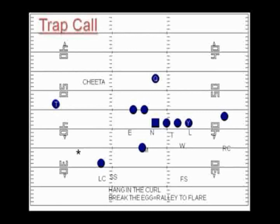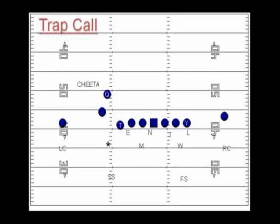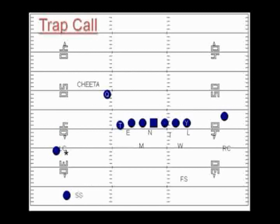Force the quarterback to throw to the flare — give the star an opportunity to vision, break, make a tackle, and rally to the ball. On a sprint out, the quarterback is moving to launch point — the corner starts to sink, sits down, and splits the zone. Seeing two vertical, he knows he's got to split the zone at 12 yards, play underneath number two, then give a china call to get the star's eyes out to number one, and the star runs to number one.